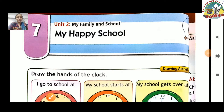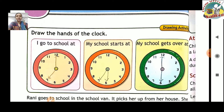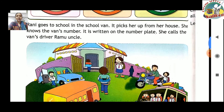Good morning students, welcome to Septal English Medium School. Today we are going to learn Chapter Number Seven: My Happy School. Let's start our chapter. First activity: draw the hands of the clock. I go to school at 7 o'clock. My school starts at seven thirty — school kaب شروع ہوتی ہے — seven thirty. My school gets over — school khatam kab hoti hai — at twelve thirty.